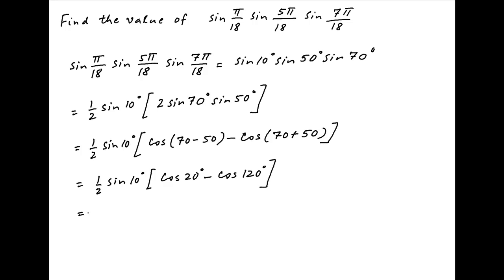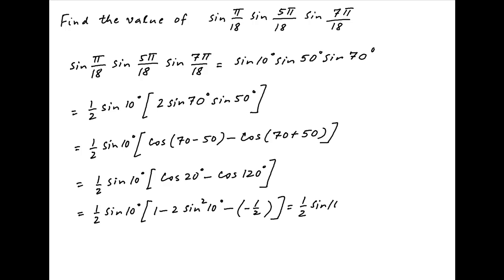Now cos of 20 degrees is equal to 1 minus 2 times sine squared 10 degrees, and cos of 120 degrees is equal to minus half. Therefore the value of the given expression is equal to half of sine 10 degrees times, in brackets, 3 upon 2 minus 2 times sine squared 10 degrees.